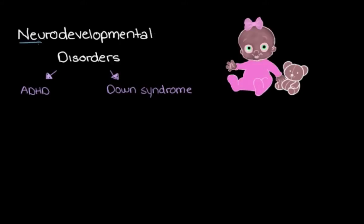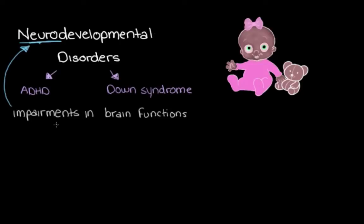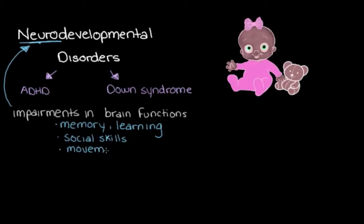We say "neuro" here, and neuro refers to the brain. We say that because with each of these different disorders, we see impairments in some of our brain-related functions — things like our memory, our learning abilities, our social skills, our ability to make movements and maintain our self-control. These are some of our brain-related functions.